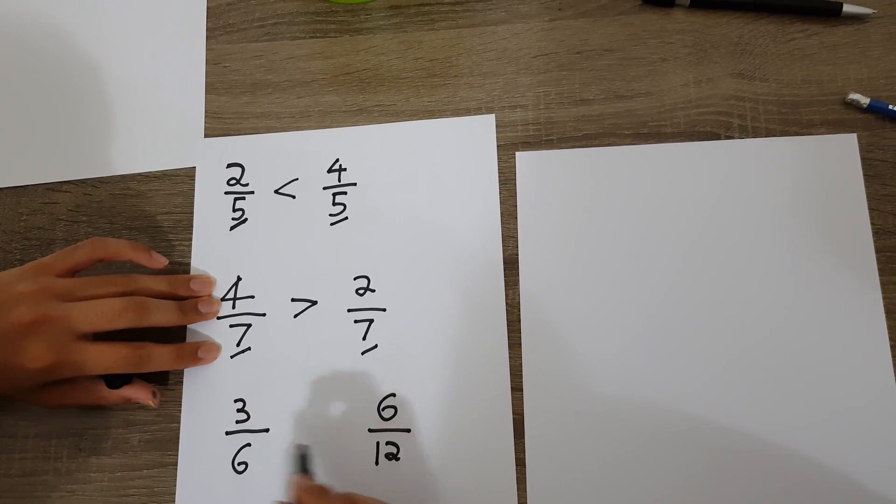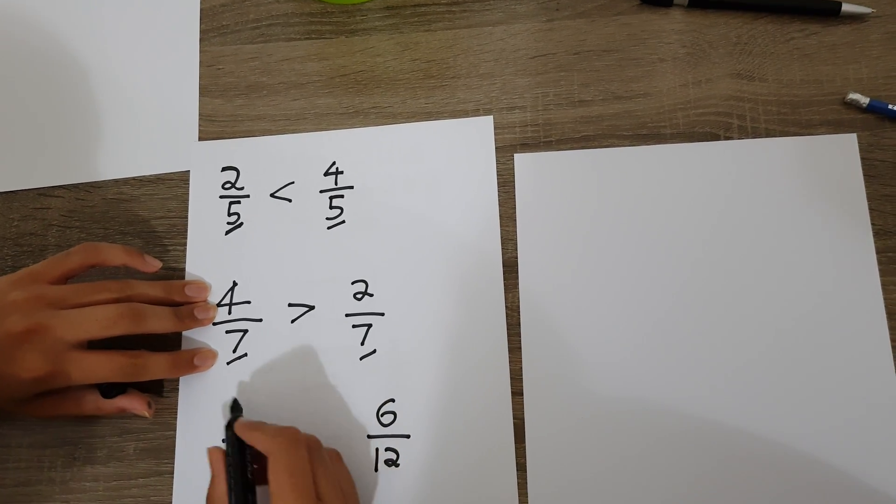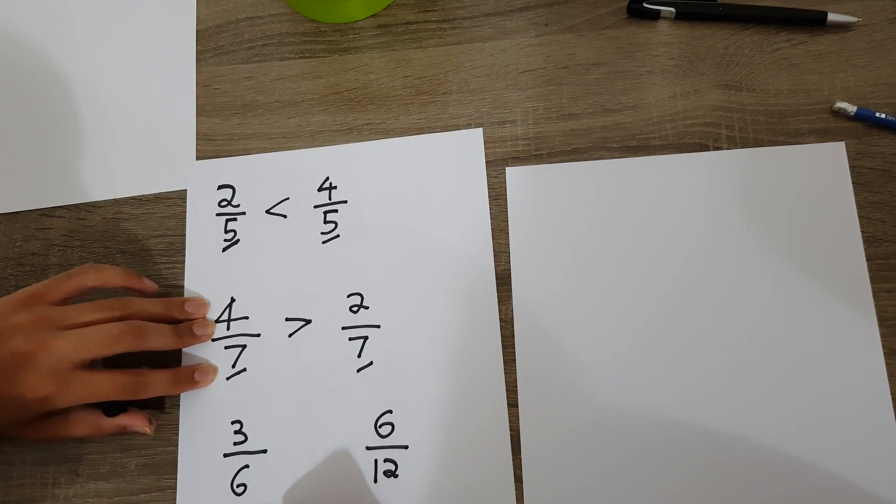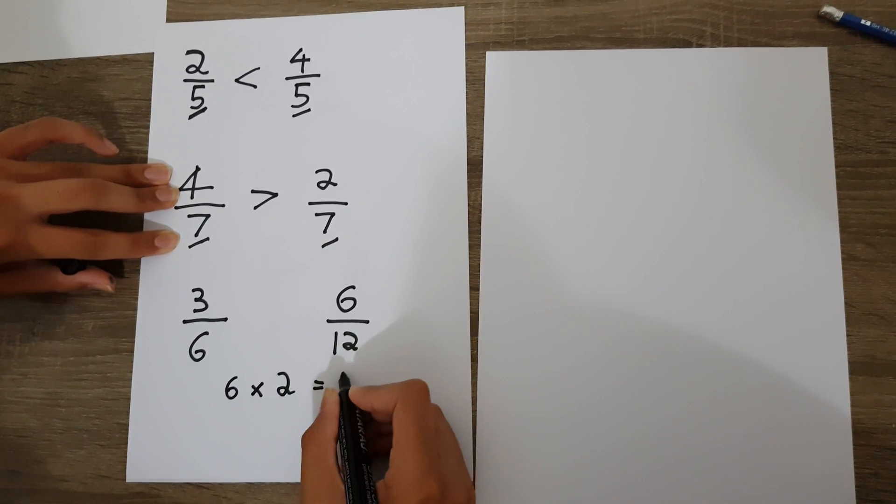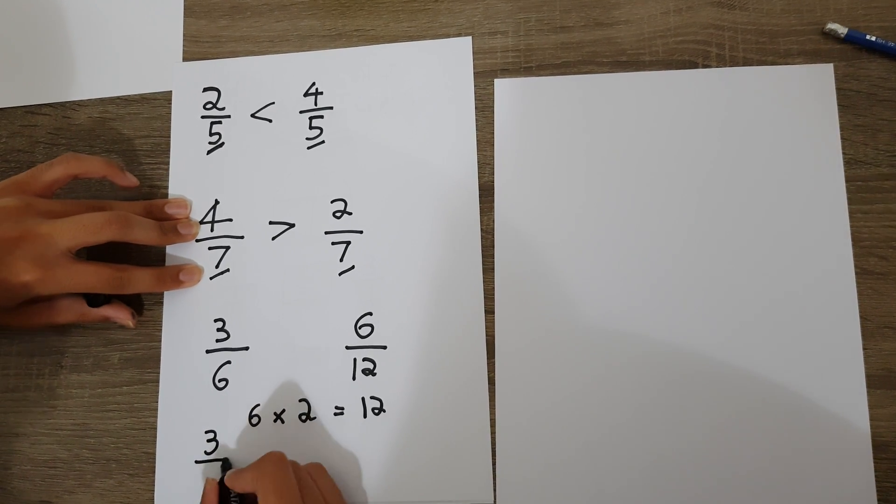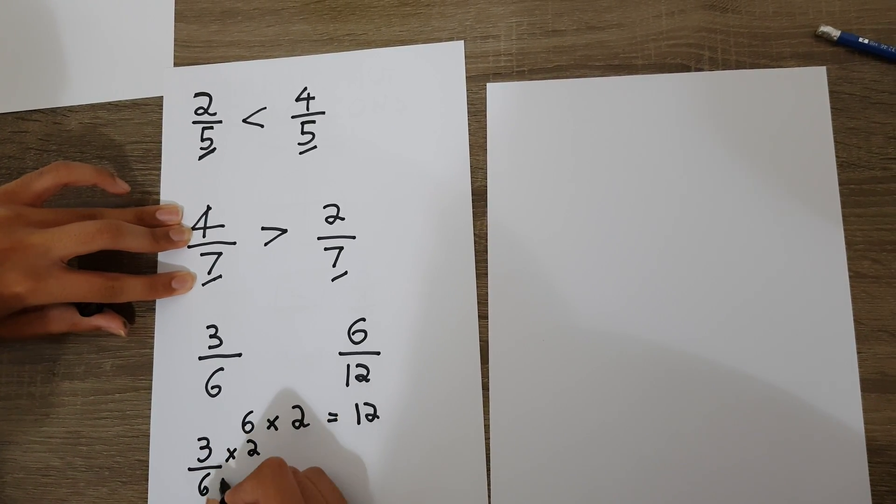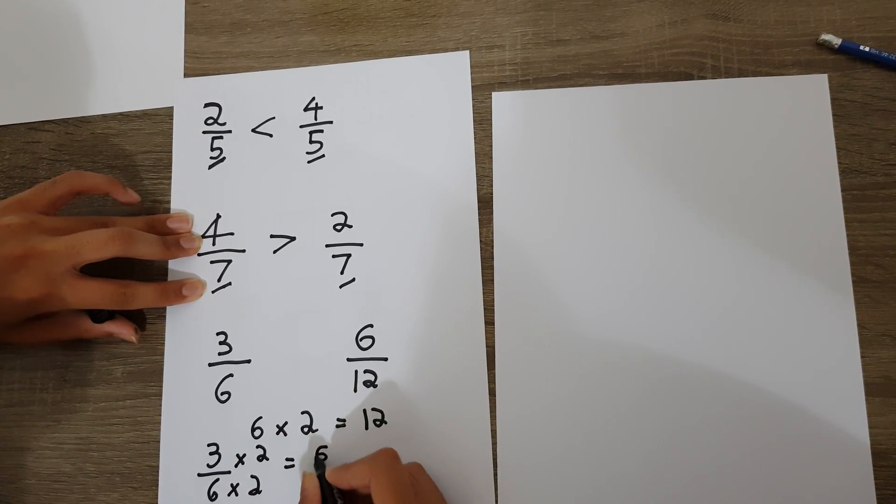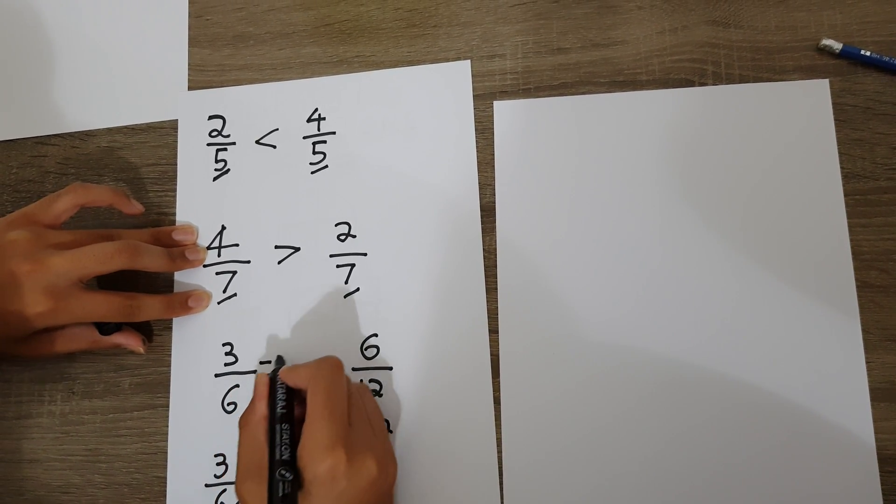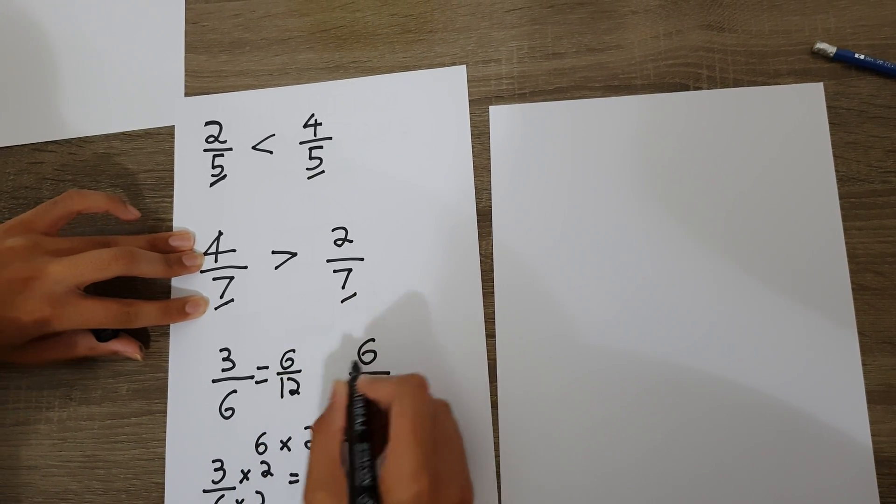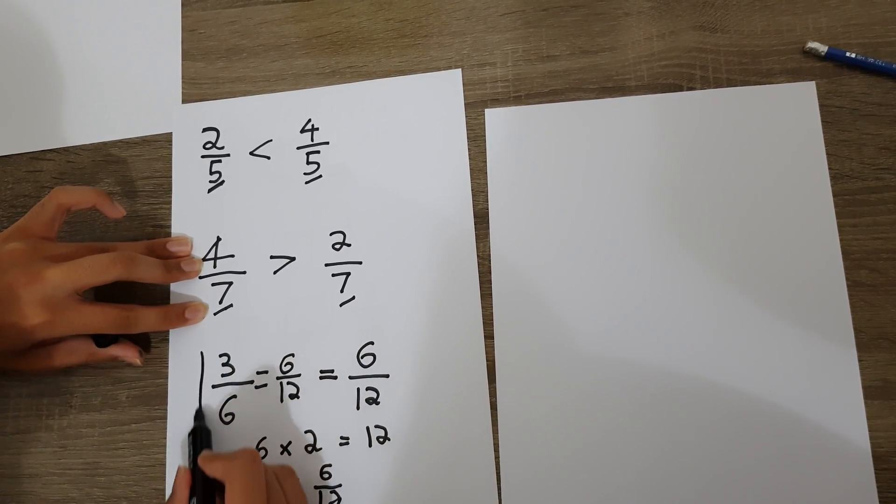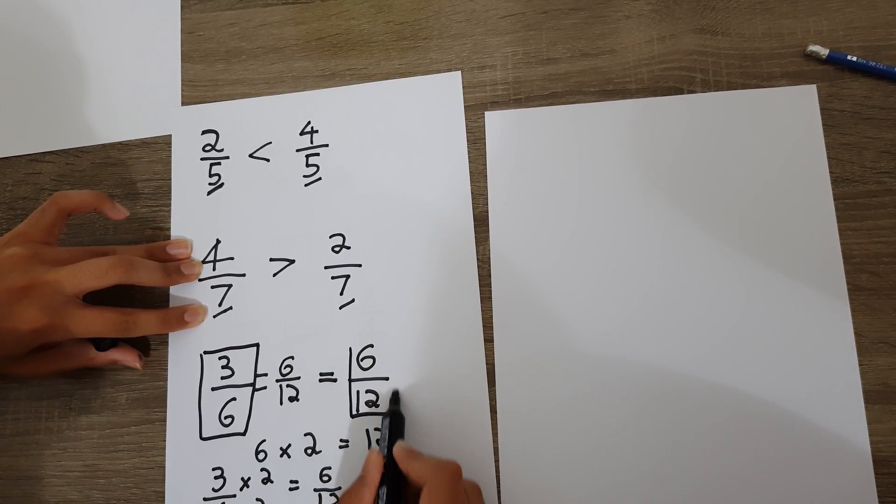We check to see how we can make this fraction the same denominator as this. This is three over six. Does six go into twelve? Yes, it does. Six times two equals twelve. So we multiply this whole fraction by two. Three over six times two over two gives us six over twelve. Oh, these fractions are equivalent! This is the same as six over twelve. Six over twelve equals six over twelve. That means three over six and six over twelve are equal.